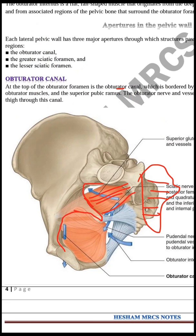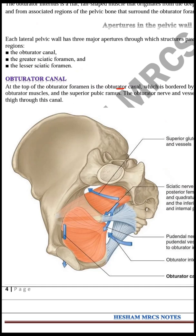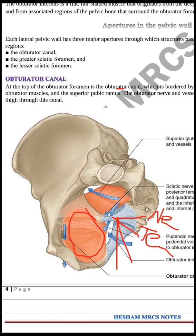Above the piriformis pass the superior gluteal nerve and vessels. Below the piriformis pass the inferior gluteal nerve and vessels, the pudendal nerve, tendon of obturator internus, sciatic nerve, posterior cutaneous nerve of the thigh, and nerve to quadratus femoris. Through the lesser sciatic foramen pass four structures: the nerve to obturator internus, tendon of obturator internus, pudendal nerve, and the internal pudendal artery.